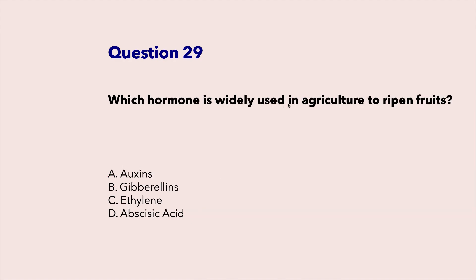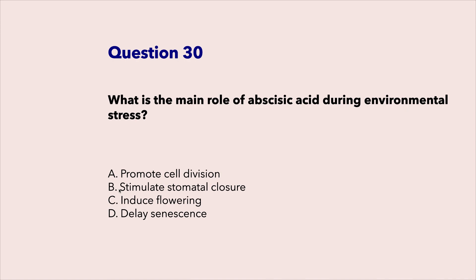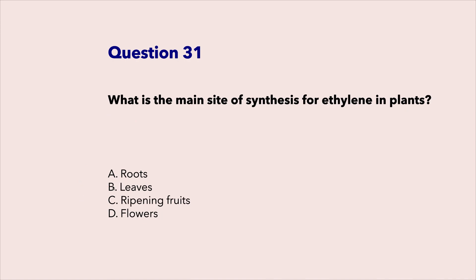Which hormone is widely used in agriculture to ripen fruits? Ethylene. What is the main role of abscisic acid during environmental stress? Stimulate stomatal closure. What is the main site of synthesis for ethylene in plants? Ripening fruits.